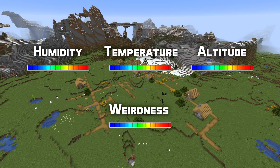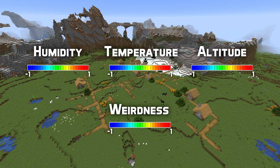Generally speaking, for temperature, humidity, altitude, and weirdness, the values you are looking for are between -1 and 1. It is possible to set values outside of this range — all the way down to -2 and all the way up to +2 — but you should probably understand exactly what you're doing before you do that.